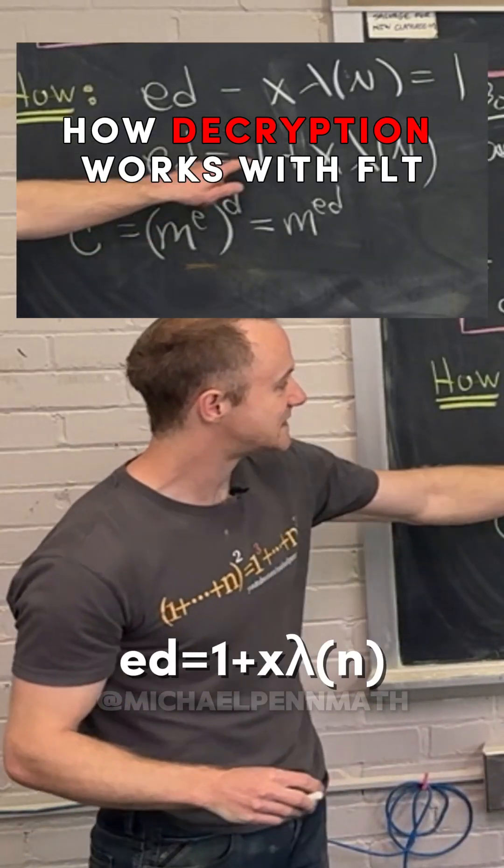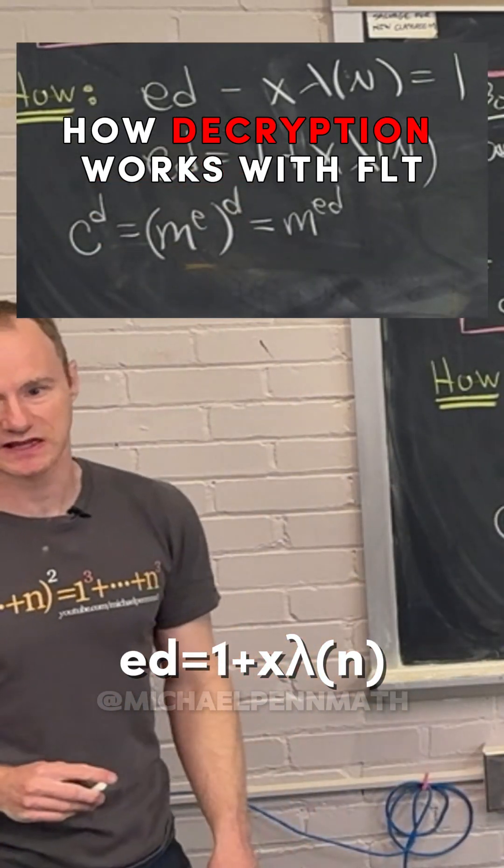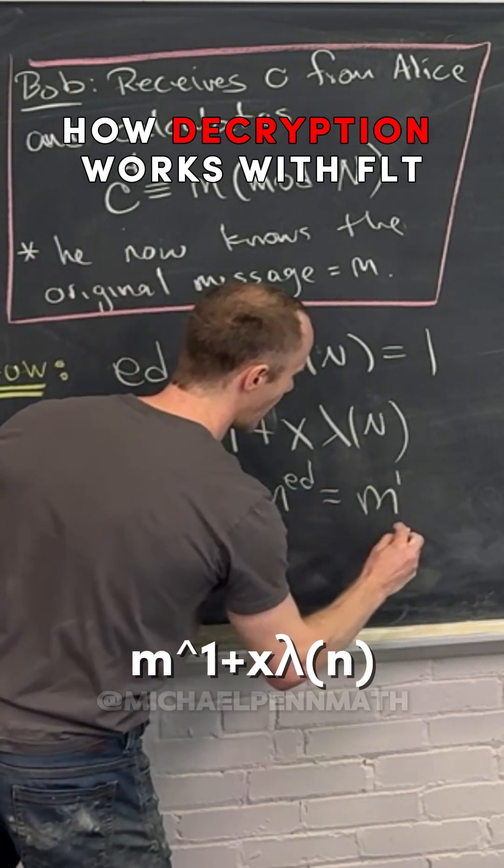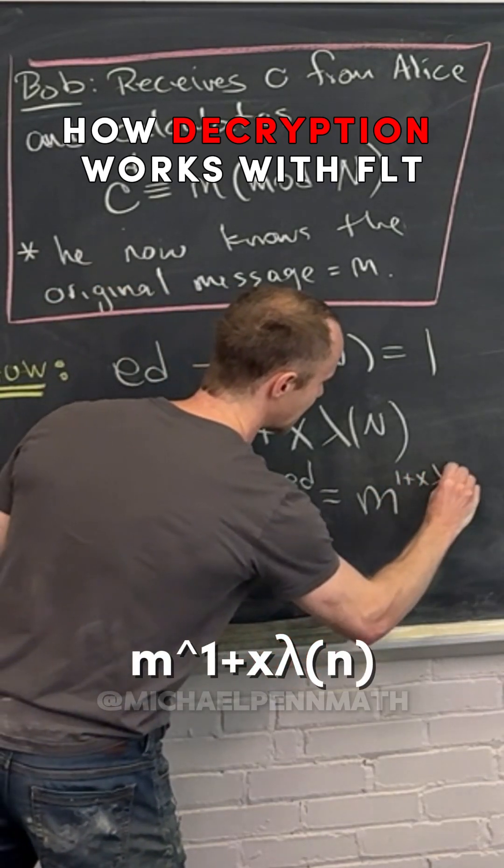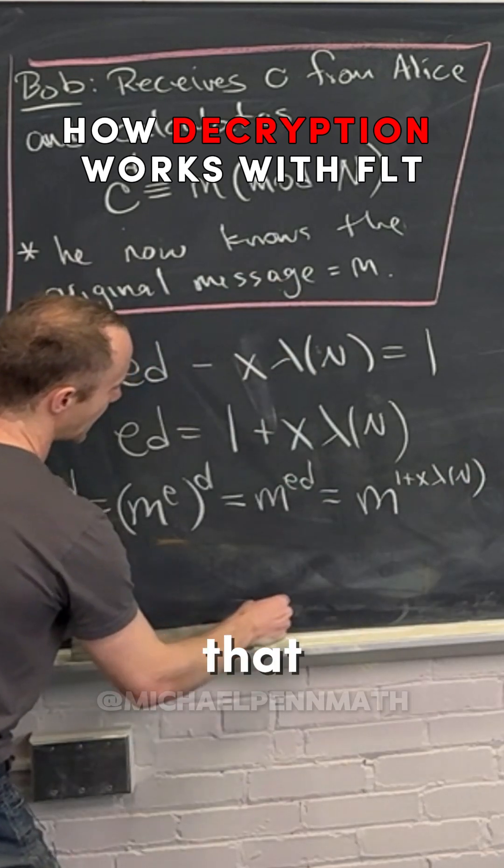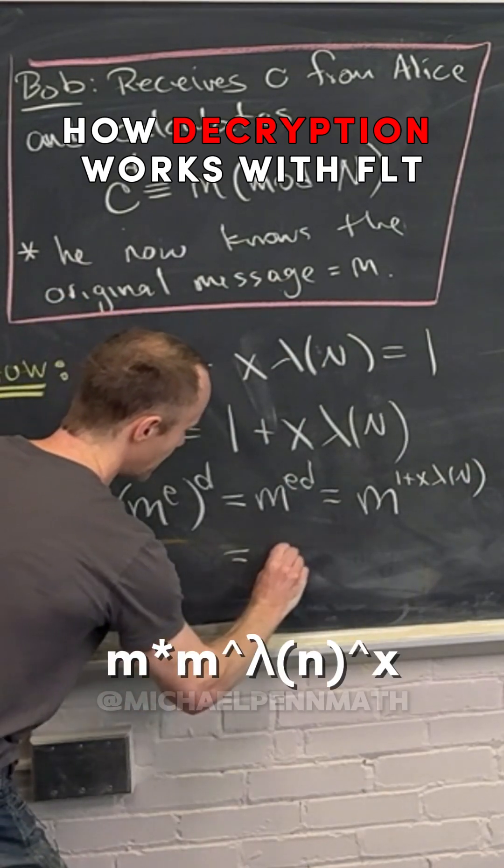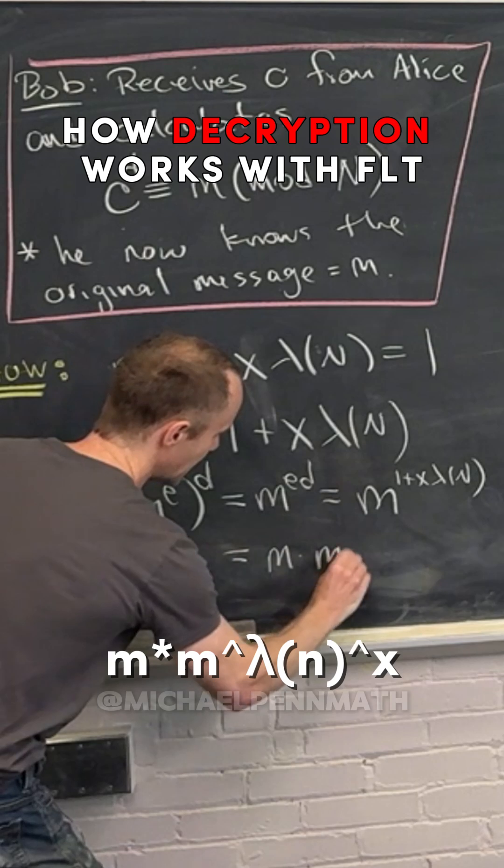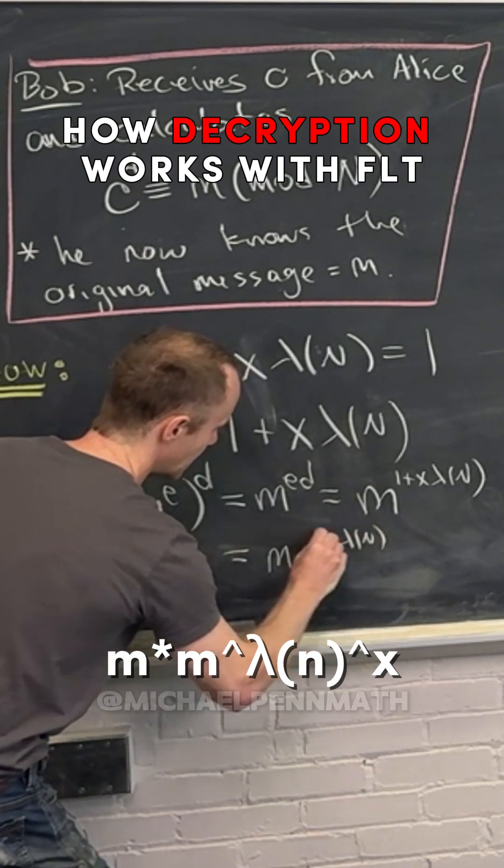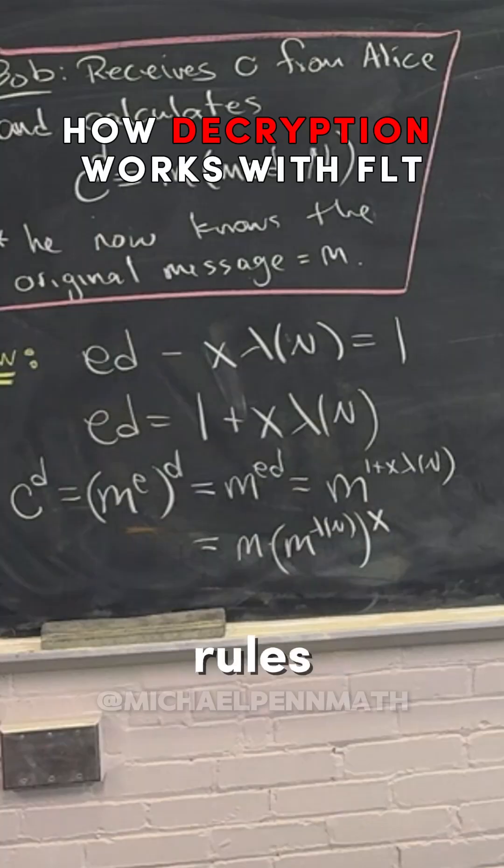But now observe that that is m to the e times d power by exponent rules. But now we know that e times d is equal to one plus x times lambda n. So this is equal to m to the one plus x times lambda of n. But observe that that's equal to m times m to the lambda of n raised to the x power, again by exponent rules.